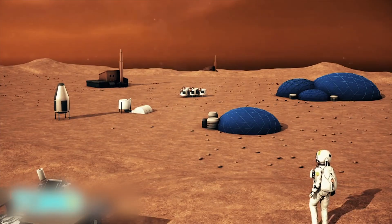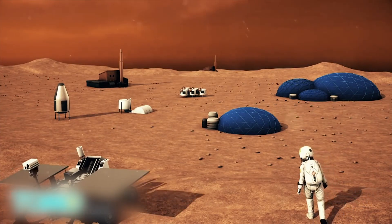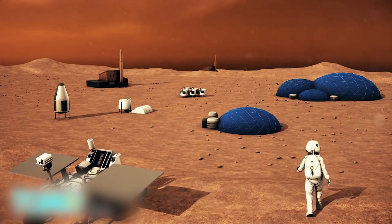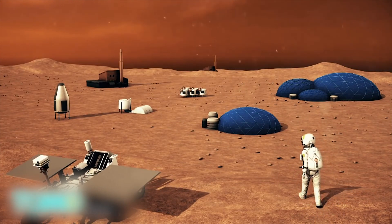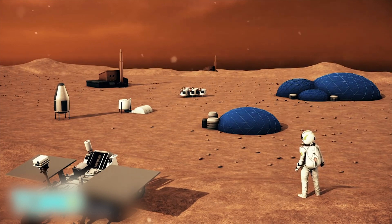Mars One will launch a team of four members every two years, starting in 2026. It will take a year after departing Earth for a team to land on the surface of Mars. The organization hopes to train and send new teams, even after the initial six have colonized the planet.